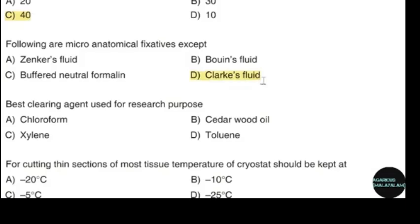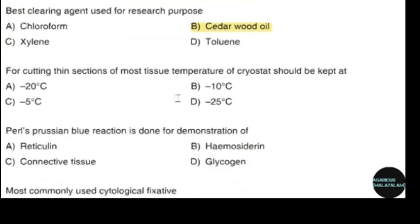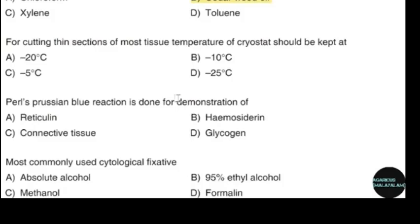Best clearing agent used for research purposes. Correct answer: option D — Cedarwood oil. For cutting thin sections of most tissue, the temperature of the cryostat should be kept at. Correct answer: option D — Negative 20 degrees Celsius.